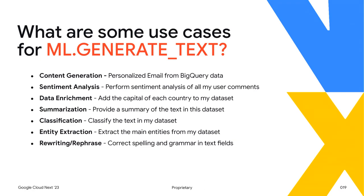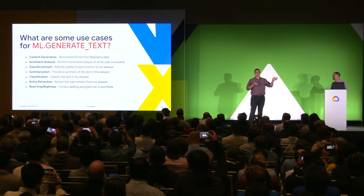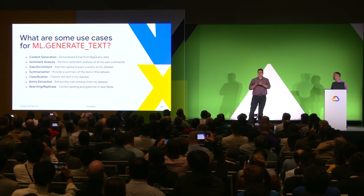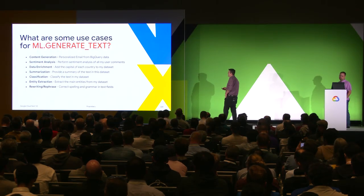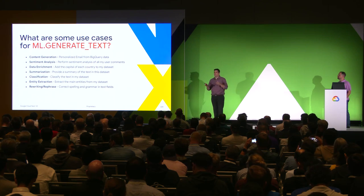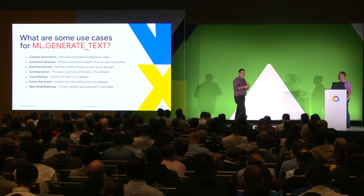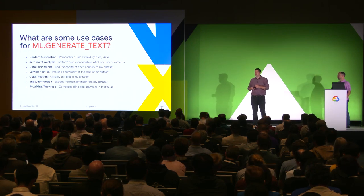So what are some use cases you might have for ML generate text? We were working with a beauty supply products company creating personalized emails — they have columns of demographic data like a woman from Kansas who's age 60, and it personalizes the message they want to send. It's really good for common NLP tasks like classification, entity extraction, and sentiment analysis. LLMs can really simplify a lot of that. And for rewriting and rephrasing: we were working with a call center that has a lot of transcribed data from calls — the computer often doesn't get it right — so they're using the LLM to clean up that data to make it easier for analysts to read downstream.